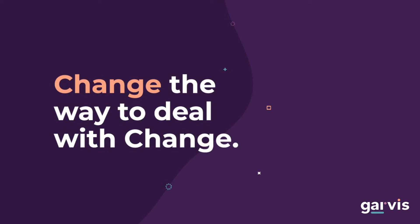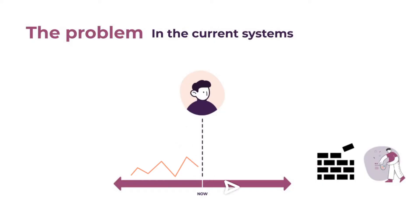Garvis. Change the way to deal with change. Everything an organization does is based on their forecast — what they buy, what they produce, what they promote.